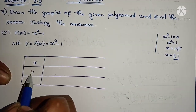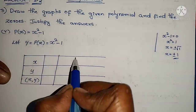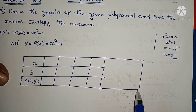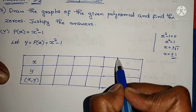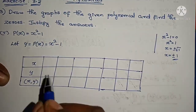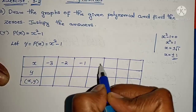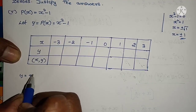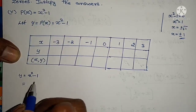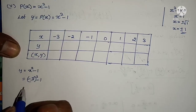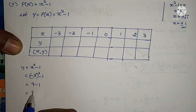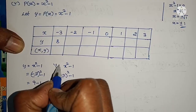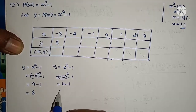Setting up the table with x values: minus 3, minus 2, minus 1, 0, 1, 2, 3. For y = x² minus 1: substituting minus 3: minus 3 whole square minus 1 = 9 minus 1 = 8. Substituting minus 2: 2 square 4, 4 minus 1 = 3. Substituting minus 1: 1 square 1, 1 minus 1 = 0.